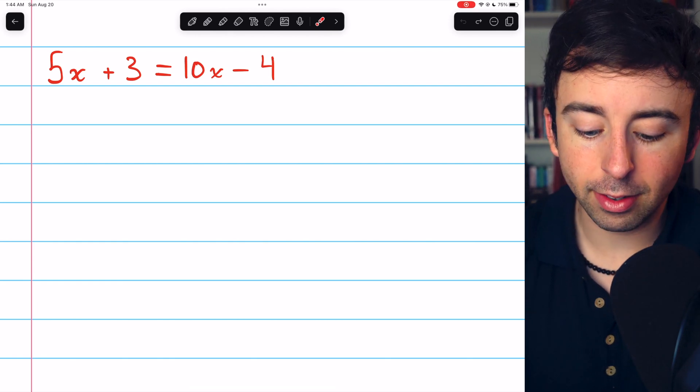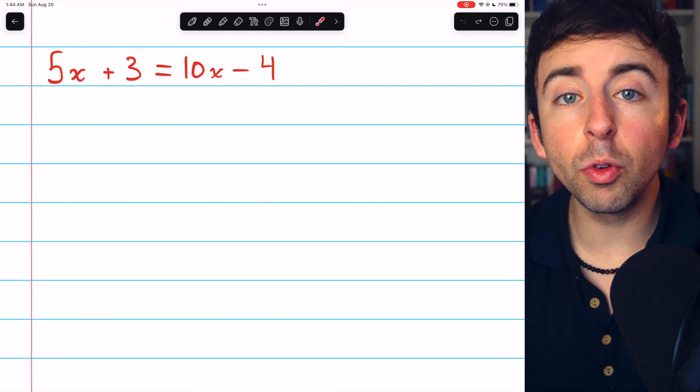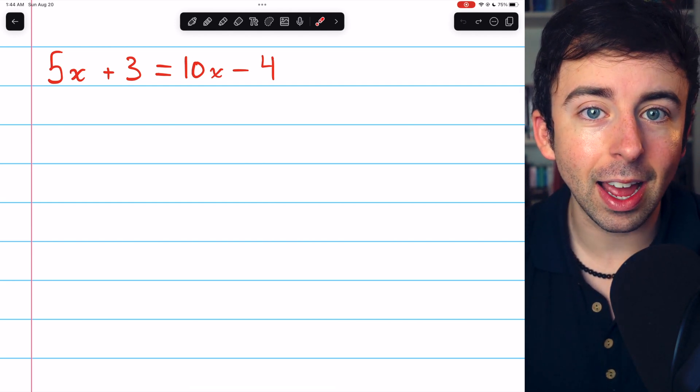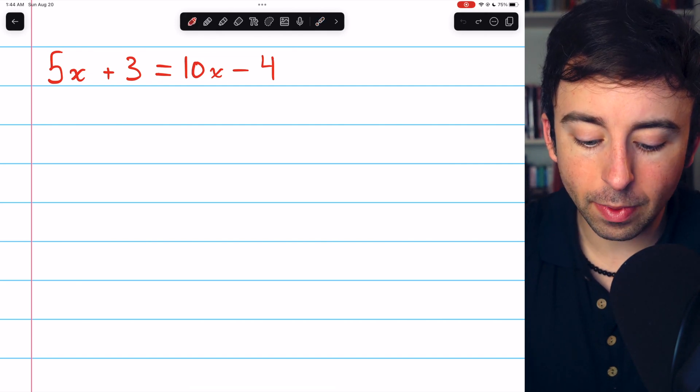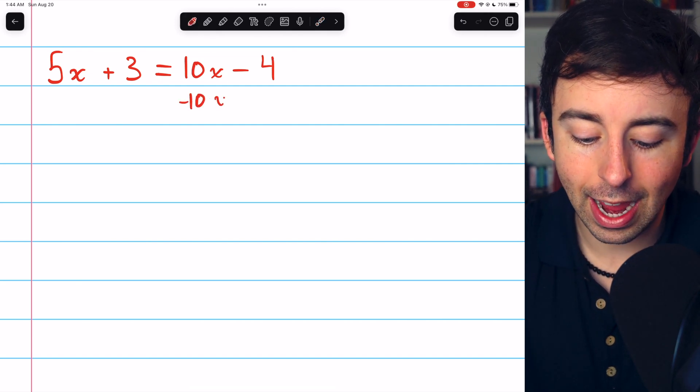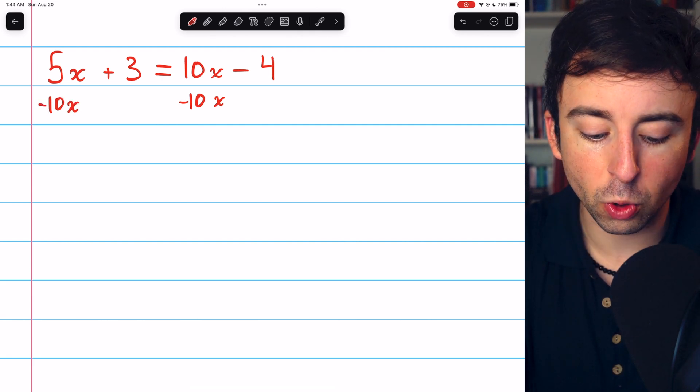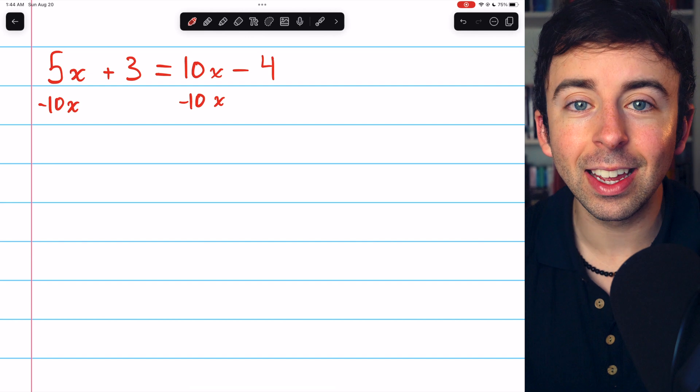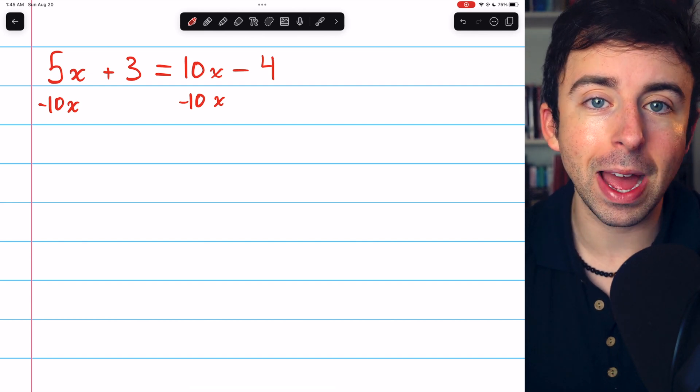Now in this case, on the right side, we have a variable term of 10x. So if we want to move all the variable terms to the left side, we're going to have to move this 10x. The way we can do that is by subtracting 10x, and we have to do that, of course, to both sides. Subtract 10x from the right side, and then subtract 10x from the left side as well to keep everything balanced.